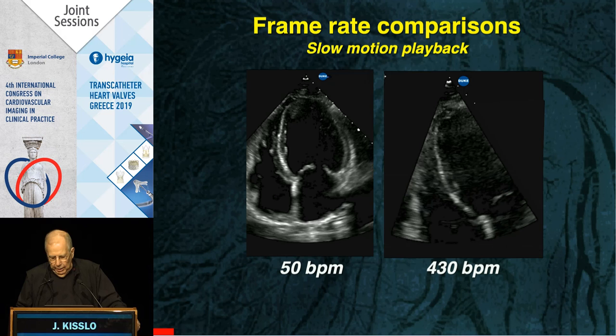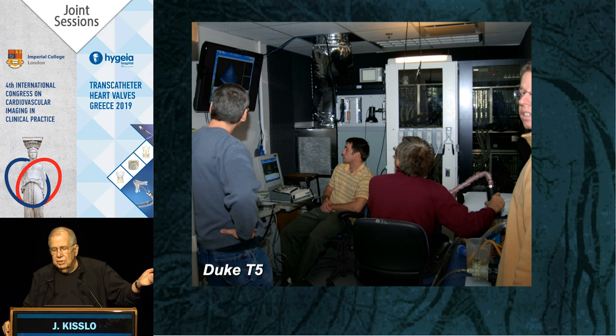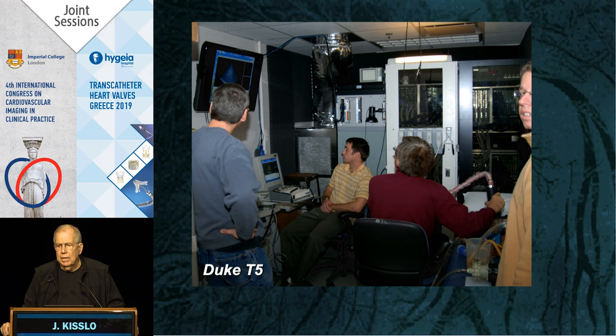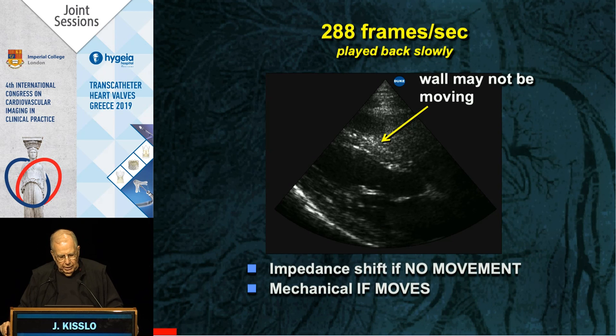My interest has always been in the development of new instrumentation — then letting other people find ways to use it. This machine is called the Duke T5 system, our fifth-generation machine. It's big, it's large, but it images very fast — up to 2,000 frames per second, which is every half millisecond. We can see many things we've never seen before. This is the transducer that's used — don't laugh — but everything has to begin small.